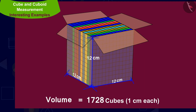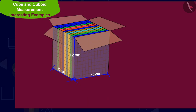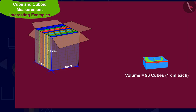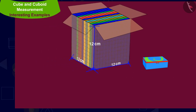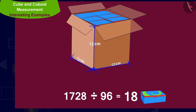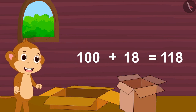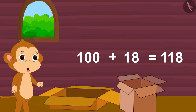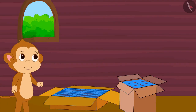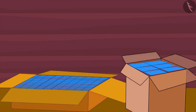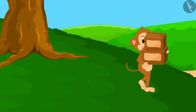In other words, the volume of this cube shaped box is equal to 1,728 centimeter cubes. The volume of a compass box is equal to 96 centimeter cubes. So 18 compass boxes can be placed in this cube shaped box. Babban can take a total of 118 compass boxes to sell in his shop by filling both boxes.